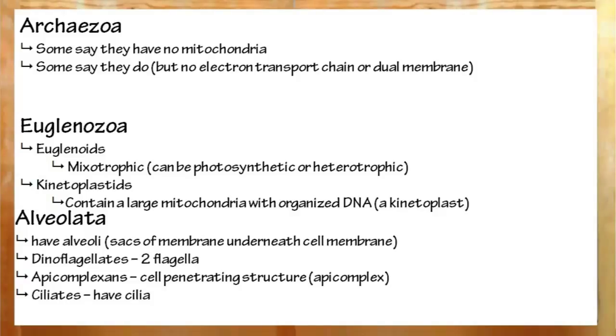Alright. Next up, euglenozoa. These consist of the euglenoids and the kinetoplastids. Euglenoids are mixotrophic. That means they can do photosynthesis as well as take in their own food. They have flagella to propel them through whatever substance they're in, and an eye spot to help guide them towards light. Kinetoplastids have a kinetoplast, which is a large mitochondria with very organized DNA.